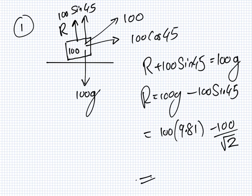So the up force equals the down force. R plus 100 sine 45, that should equal 100 G. So, R equals 100 G minus 100 sine 45. So, you need to type in 100 times 9.81 minus 100 over square root 2. What's that, then? 910. So it's 910 newtons.